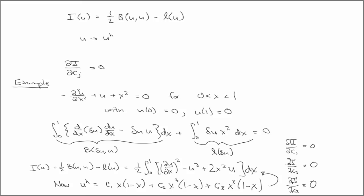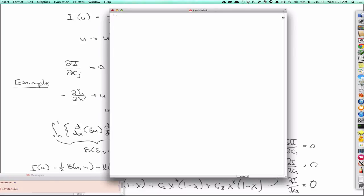And I'm just going to do it in Mathematica to save time working on the algebra. So we have our approximate u is equal to c_1 x(1-x) plus c_2 x^2(1-x) plus c_3 x^3(1-x).